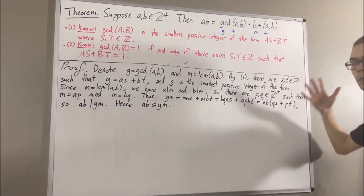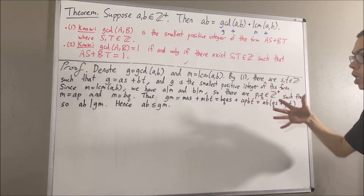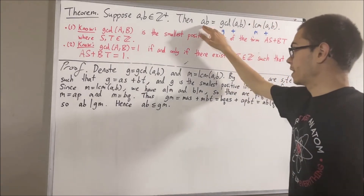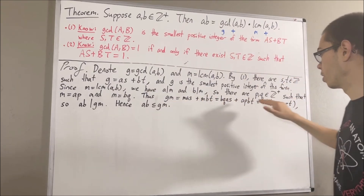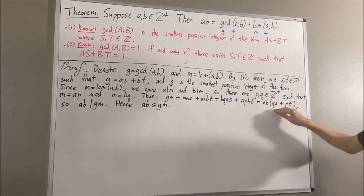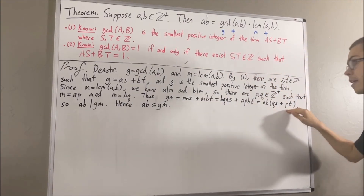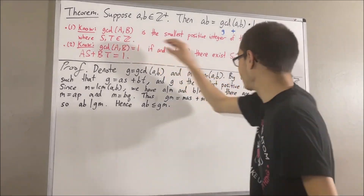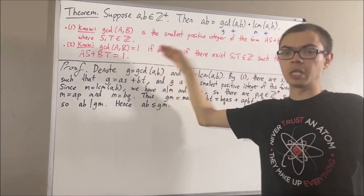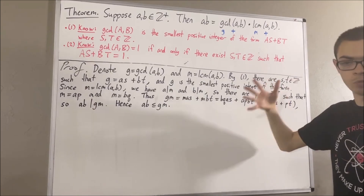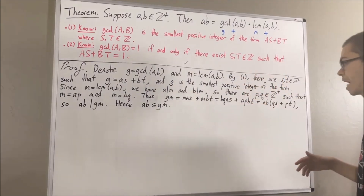Now let's show that the greatest common divisor of P and Q is equal to 1. We expect this because we expect AB to equal GM, which means the integer factor should be 1. And if that integer is equal to 1, fact number 2 tells us that the greatest common divisor of P and Q is equal to 1. So let's prove that. Let D denote the greatest common divisor of P and Q. By definition, D is a divisor of P and D is a divisor of Q.